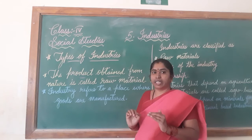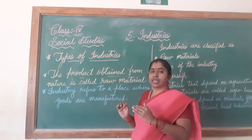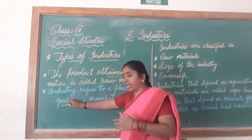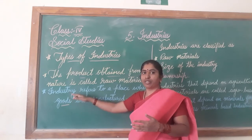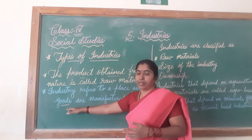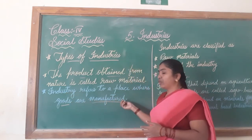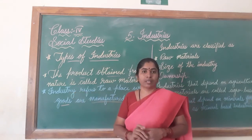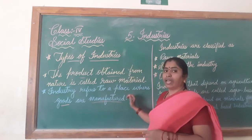In the industry, you take the raw material first and it will be processed and made into a good. For example, wood is used as raw material and we make it into furniture. That place where goods are manufactured is called an industry.